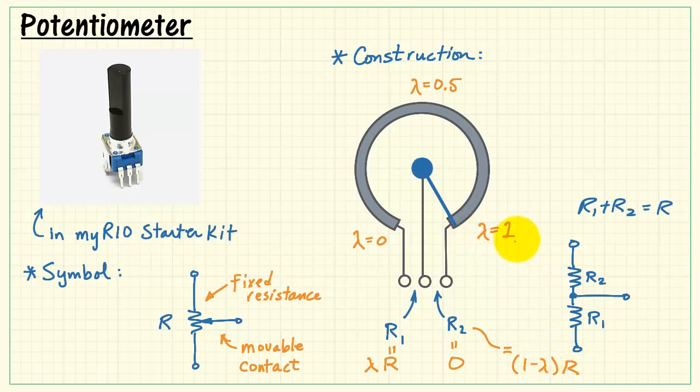This way, as you vary the wiper from 0 to 1, you can see how the two resistances, R1 and R2, respond accordingly.